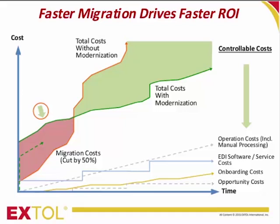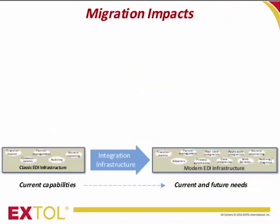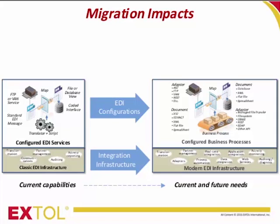There are three main investment areas that EDI migration impacts. Replacing integration infrastructure is the first area, providing new capabilities such as support for new document syntaxes, more powerful process automation, and better performance and throughput — determined at the point where you choose your modern EDI replacement solution. The second investment impact is on EDI configurations, including trading partner connections, maps, application and data interfaces, and other assets that you or your service provider create. This is the primary focus of the discussion going forward.